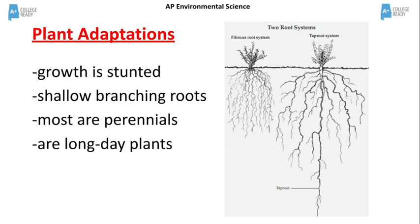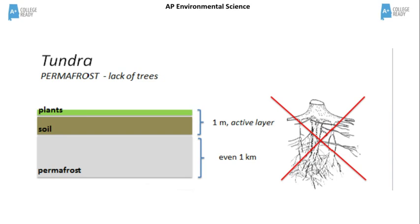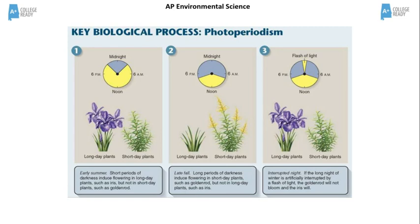Perennials are plants that bloom for a shorter period of time. The active layer in the tundra where plants grow is very shallow. Long day plants bloom when periods of darkness are short. Since summer in the tundra has shorter periods of darkness, this triggers the perennial long day plants to bloom.